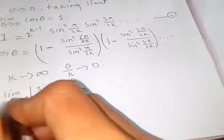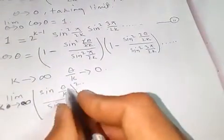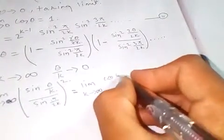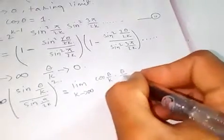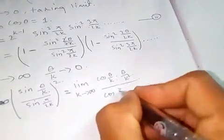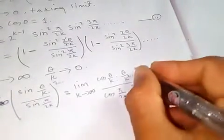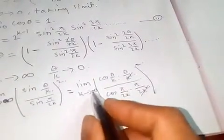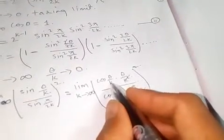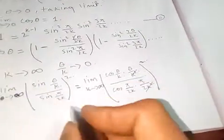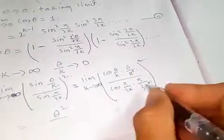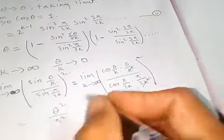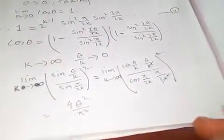As k tends to infinity we apply L'Hôpital's rule: the derivative gives cosine of theta over k times theta over k squared, divided by sine of pi over 2k times pi over 2k squared. The 2's cancel, and putting k equal to infinity, cosine of zero is one, so we get theta squared over pi squared over 4, which is 4 theta squared over pi squared.